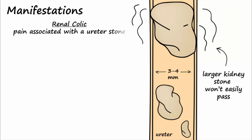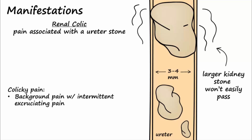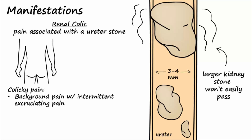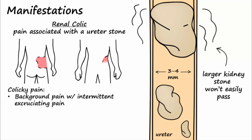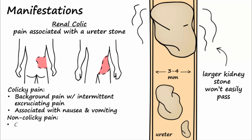Renal colic is the pain associated with a ureter stone. There is a continuous pain, but excruciating waves of pain come on intermittently as periodic peristaltic ureter contractions attempt to force the stone down the ureter. This colic pain occurs in the lower back and flank region on the affected side, and may radiate to the abdominal region and down to the groin area. Intense colic pain is often associated with nausea and vomiting. In contrast, non-colic pain is continuous and is typically not as intense, and is associated with the stone being in the renal calyces or renal pelvis.